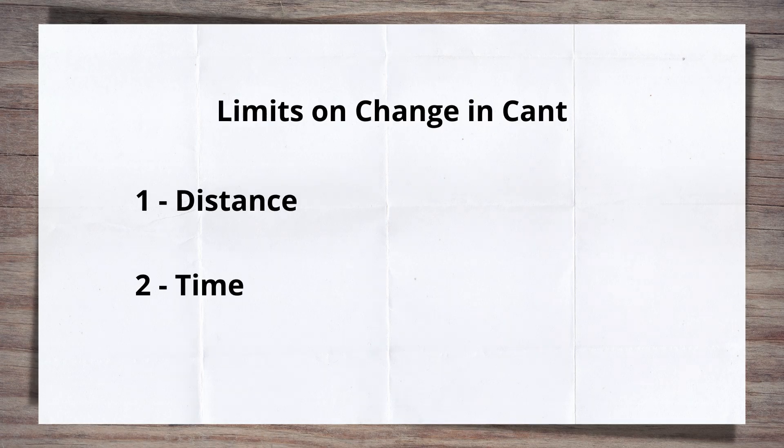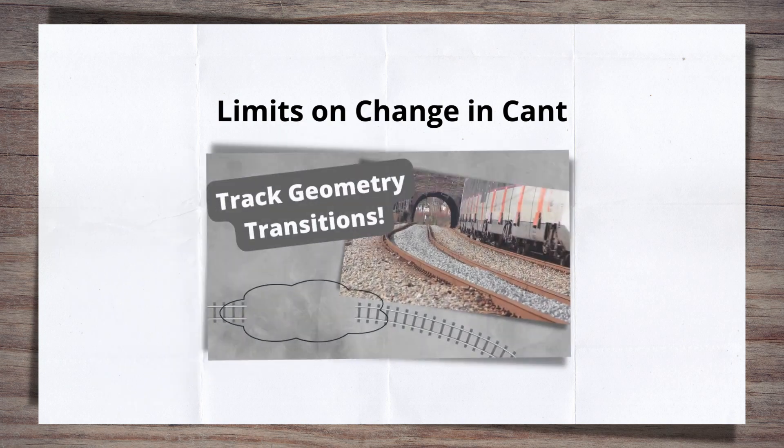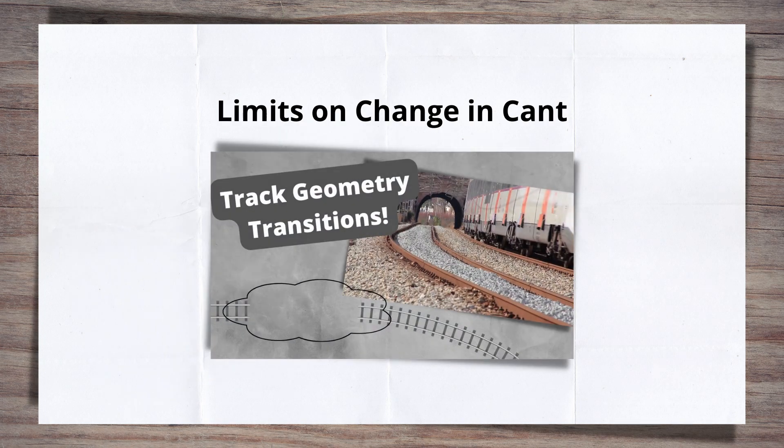Changing cant by time is more of a measurement per passenger comfort and is known as the rate of change of cant. This is worked out using train speed, and I discuss it at length in my video on transition design. Check it out at the top right hand corner or in the description below.